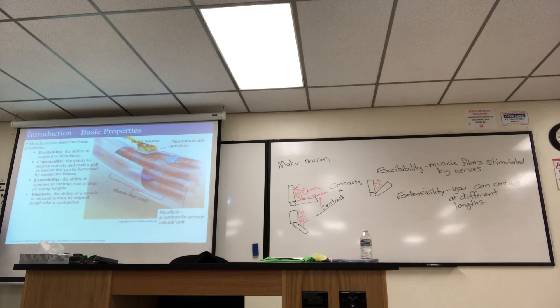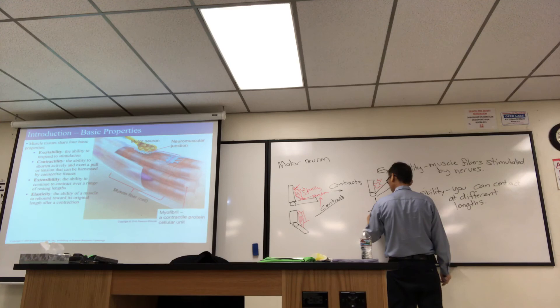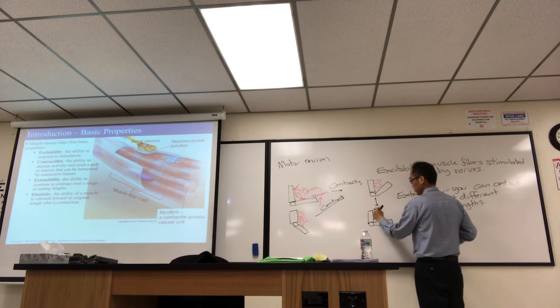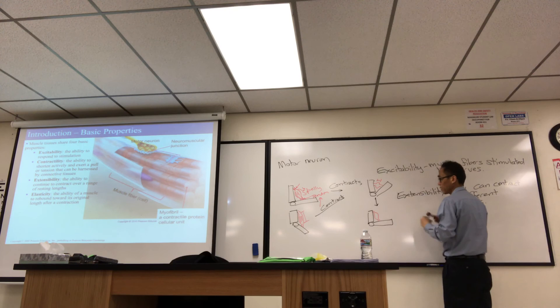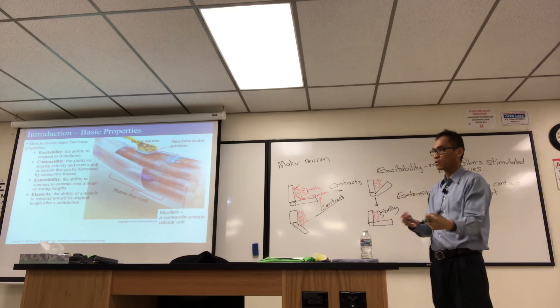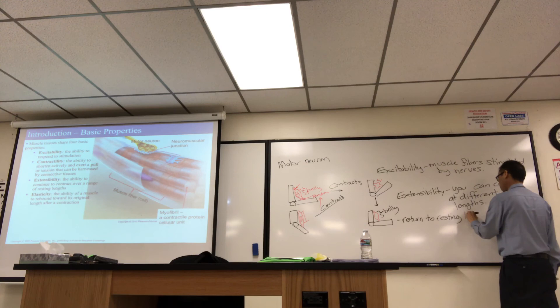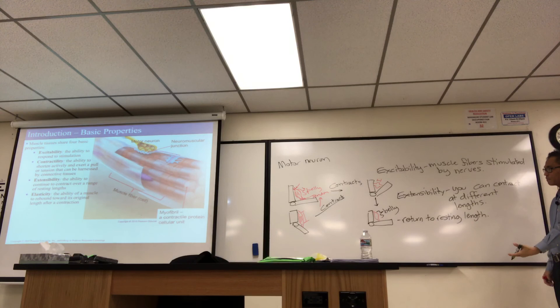Elasticity is the ability of muscle to rebound towards its original length after a contraction. So after you contract, it doesn't get all squished. Okay? It goes back to normal. So after you contract, you can return to your original resting length, whatever that was, at this 90 degree angle. Okay? Here's the belly. So we say that muscle is elastic because you kind of had it all stretched out. You contracted. You went back to the original length, and you're okay. You're still functional. That illustrates the concept of elasticity.